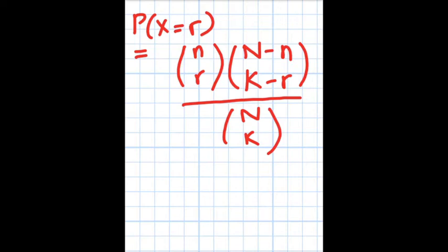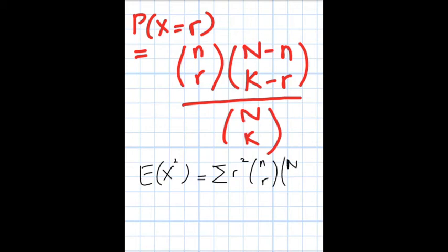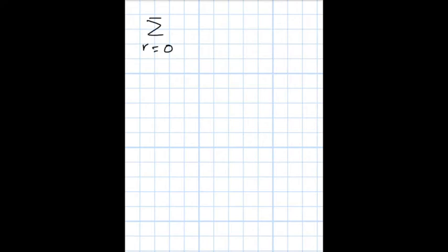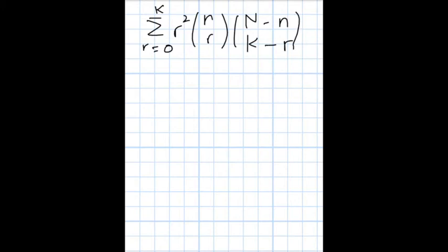Let us now calculate the variance of the hypergeometric distribution. For the variance, we first find the second moment, which is the sum from r=0 to k of r squared times C(n_r, r) times C(n minus n_k, k minus r), divided by C(n_k, k). For simplicity, I am going to ignore this denominator for a while and work with only the numerator.